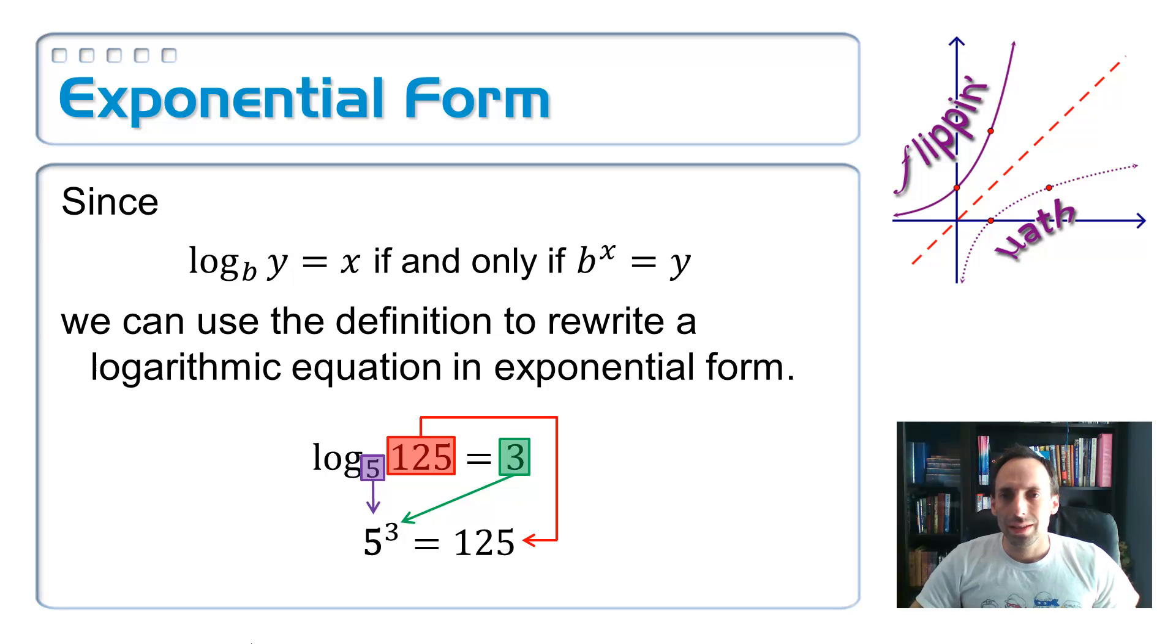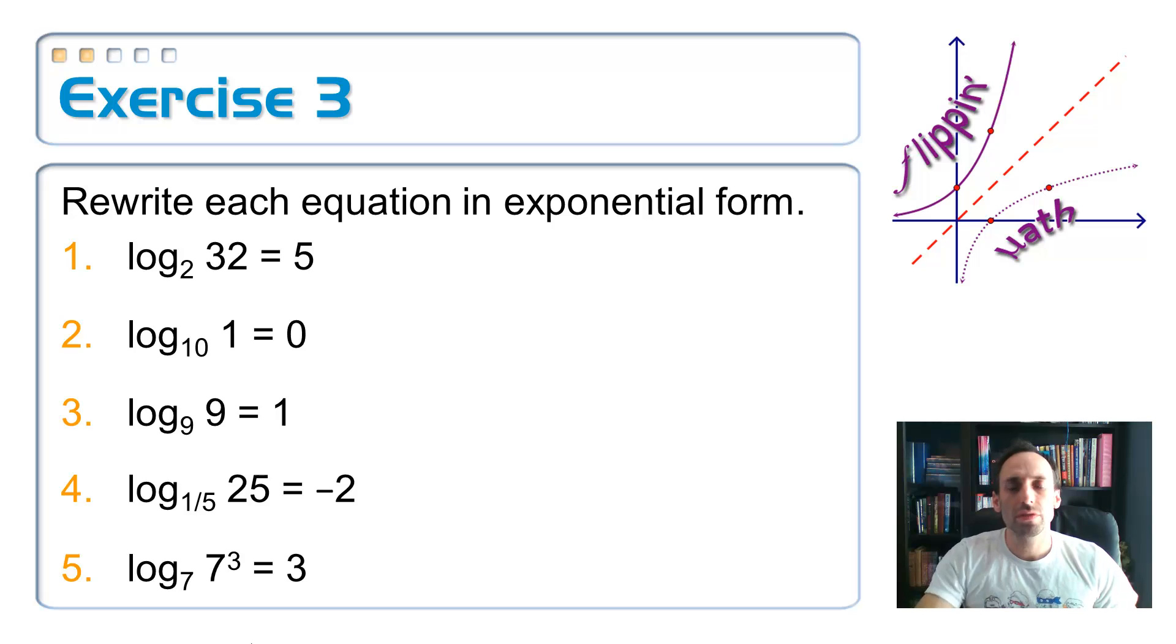So just let me draw in a couple of arrows here to link these things up. The base is the same thing as the base of the exponential. The exponent is the same thing as the answer to the logarithm. And then finally, what you're taking the log of is the answer to the exponential equation. So let's try this ourselves right here. Rewrite each of these equations in exponential form. So for the first one, locate what the base is. And it's 2. So this should be written as 2 to the fifth power, because the answer to a logarithm is an exponent, is equal to 32. In other words, what this is asking you is, what power do you have to raise 2 to in order to get 32 as an answer?